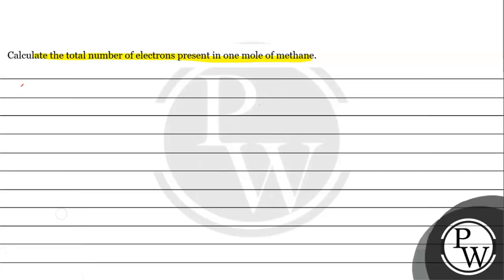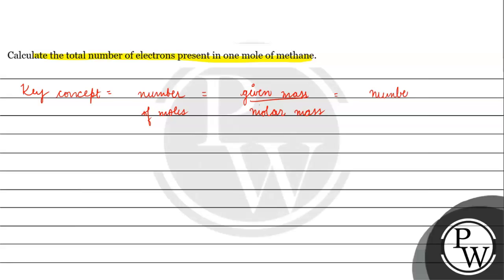The key concept for this question is: number of moles is basically equal to given mass divided by molar mass. Number of moles is also equal to number of molecules divided by Avogadro's number.